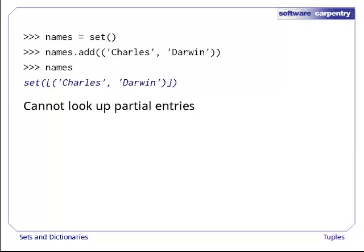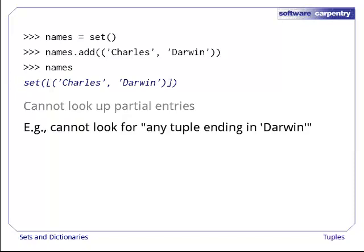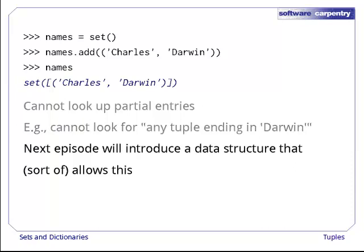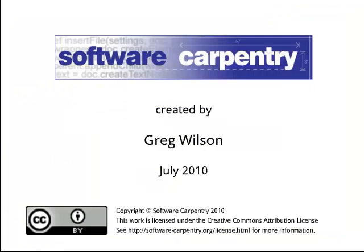Tuples in sets are very useful, but one thing beginners often trip over is that you cannot look up partial values in tuples. For example, there's no way to say 'give me all the tuples in this set that end with the name Darwin.' The next episode of this lecture will introduce another data structure that allows you to do something very much like this.